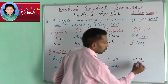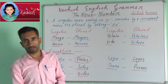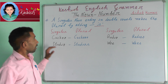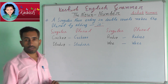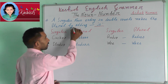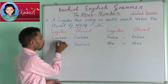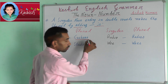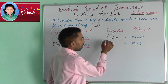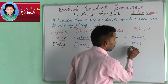More exceptions to Rule 3: logo → logos, piano → pianos. Fourth rule: a singular noun ending in double vowels makes the plural by adding S. For example: cuckoo → cuckoos, studio → studios, radio → radios, woe → woes.